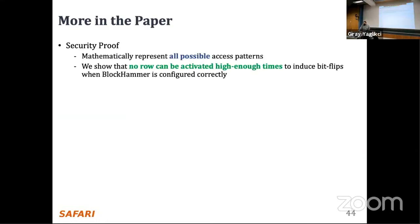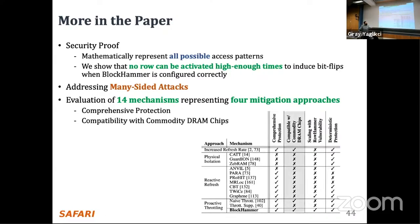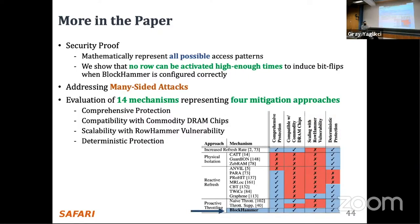The paper includes more analysis: a security proof mathematically showing that no row can be activated at a high enough rate to induce bitflips when BlockHammer is configured correctly; how BlockHammer addresses many-sided attacks by tuning thresholds; and an evaluation of all four high-level Rowhammer mitigation approaches across 14 mechanisms from four aspects: comprehensive protection, compatibility with commodity DRAM chips, scalability with worsening Rowhammer vulnerability, and deterministic protection. BlockHammer is the only mechanism that satisfies all of them.